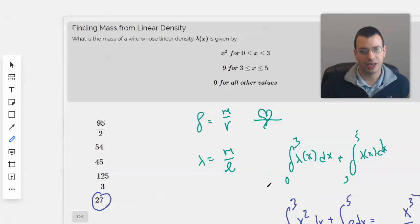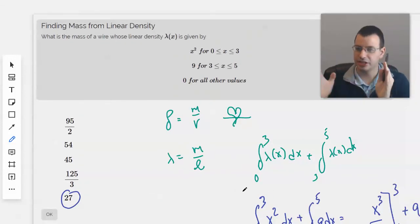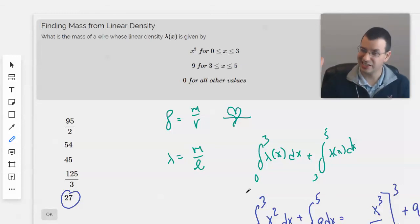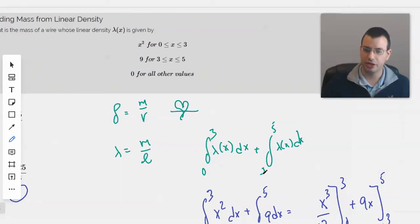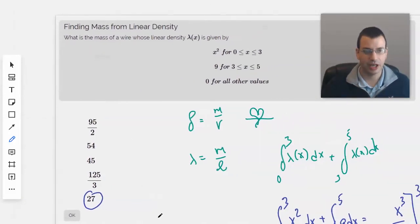With a linear density, you're given a density based on the x value, or y value, or z value - a single dimension. We integrated from 0 to 3, then 3 to 5, given our specific values, found an answer and solved the problem. That is the idea behind linear density.